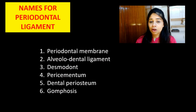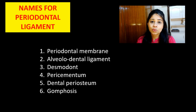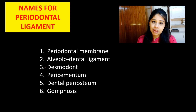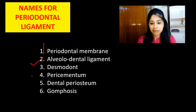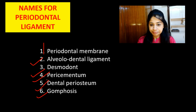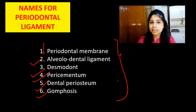Many authors who have studied the periodontal ligament have given it different names. The periodontal ligament is also called the periodontal membrane, the alveolodental ligament, the desmodont, the pericementum, the gomphosis, and the dental periosteum. These are important synonyms to understand.